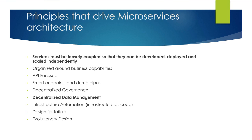Decentralized governance I'll touch on with an example later. Infrastructure automation is another important component. Designed for failure means your system should continue operating even if one or two of your ten microservices fail — the functionality of those components won't be available, but all other eight would be. And of course, evolutionary design.